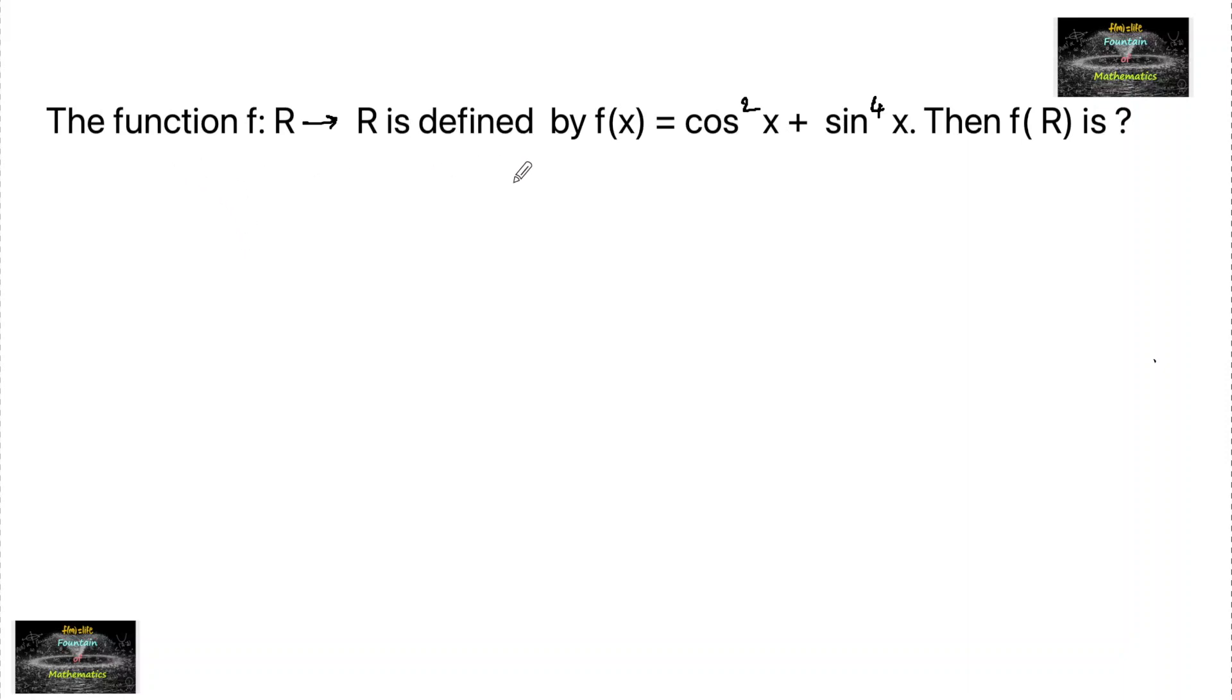The function f from R to R is defined by f(x) = cos²x + sin⁴x. Then what is f(R)? The meaning of f(R) is nothing but the range, so we need to find the range of the function f(x).